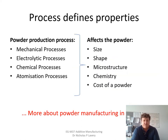The way in which powders are made affects the resulting powder significantly. Whether produced by mechanical processes such as milling, electrolytic processes, chemical processes, or physical atomization-type processes, the production method always has a shape effect on the powder. We'll see more about this in the next lecture, but for now we look at size, shape, microstructure, chemistry, and cost.